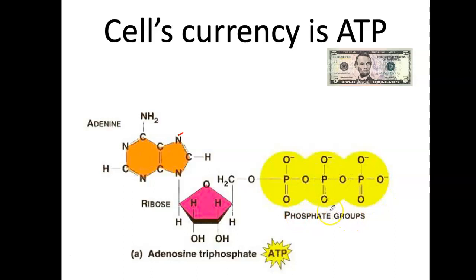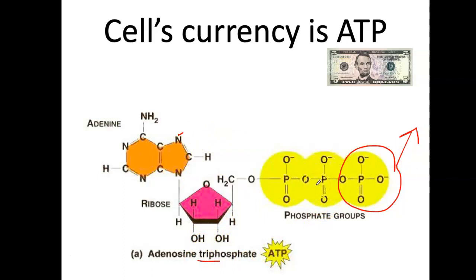When you need to do work — move a muscle or have a thought — you release that last phosphate, and you utilize that energy for that particular function. You started with adenosine triphosphate and end up with adenosine diphosphate because only two phosphates are left. You then add another phosphate, wait until it's needed, and release it as energy. ATP is your cellular currency — what you use to do work. Fat is what you store in order to make ATP, so ATP is the true currency and fat is your storage of that energy.